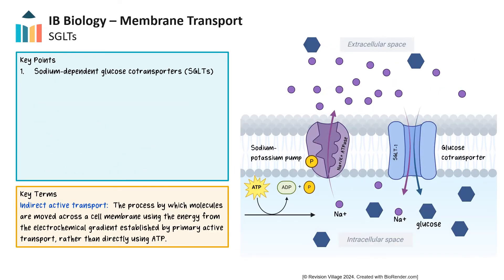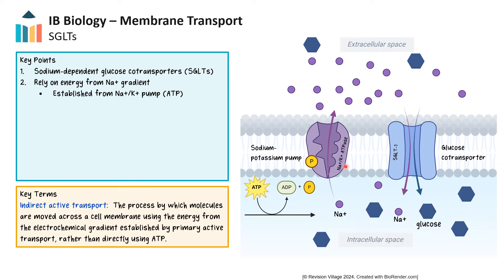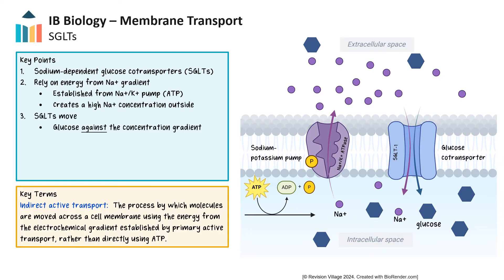Sodium-dependent glucose co-transporters, or SGLTs, illustrate a type of indirect active transport, crucial for the absorption and reabsorption of glucose in the body. These co-transporters rely on the energy of the sodium gradient, which is established by the sodium-potassium pump, actively transporting sodium out of the cell and creating a higher concentration outside. This gradient provides the driving force that allows SGLTs to move glucose into cells against its concentration gradient.